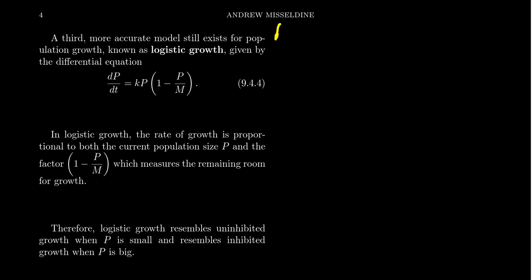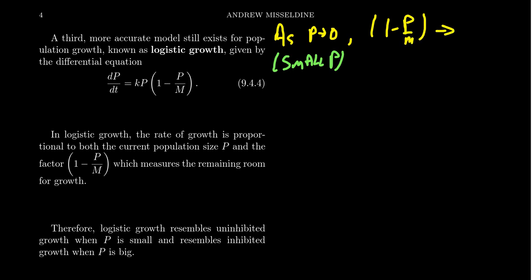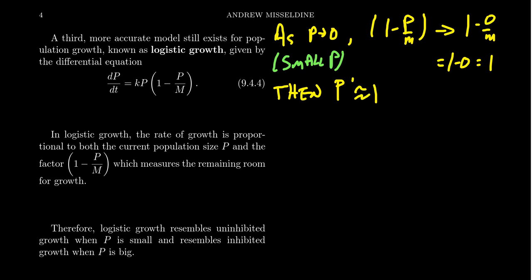What is this doing? Well, the first thing to note is as p goes to zero — if your population is really, really small — the expression one minus p over m converges to one minus zero over m, which is one minus zero, that is one. In that situation, our derivative p prime will be approximately kp times one. The one minus p over m becomes one, and thus we get kp. So when our population is small, this looks like uninhibited growth — natural exponential growth.